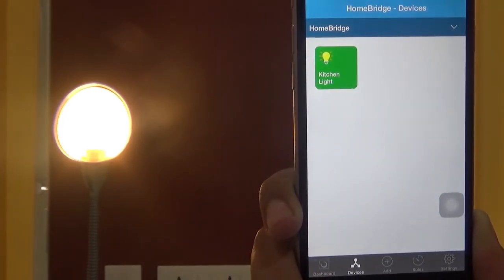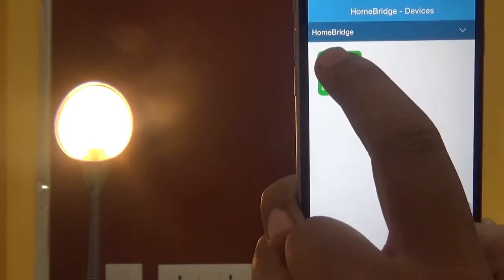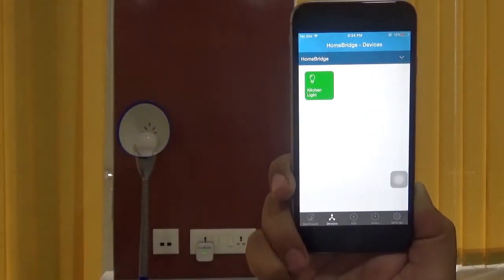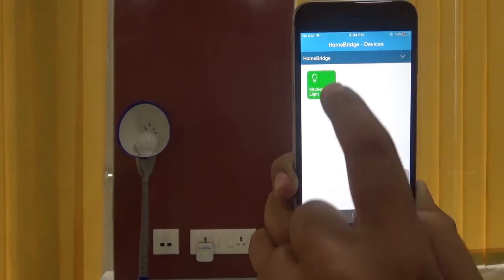You can see the light bulb is added here. The light is on already, so let's turn it off now. You can see the status of light on the small icon. Let's turn it on again.